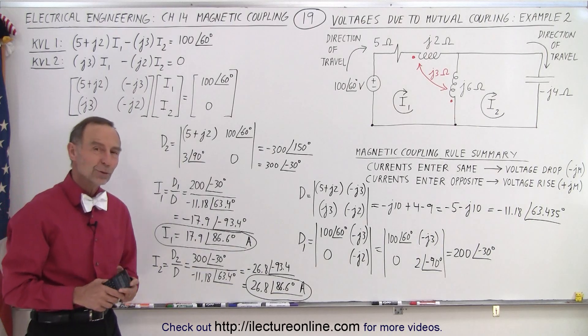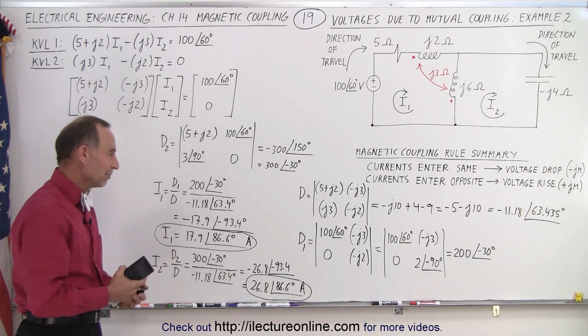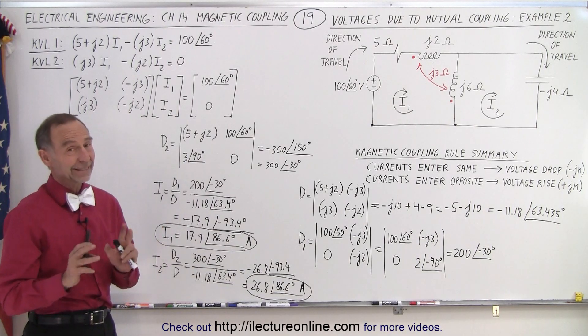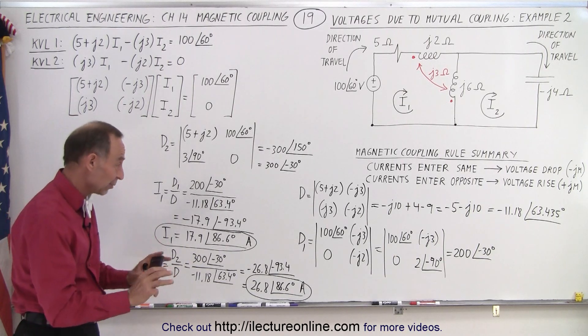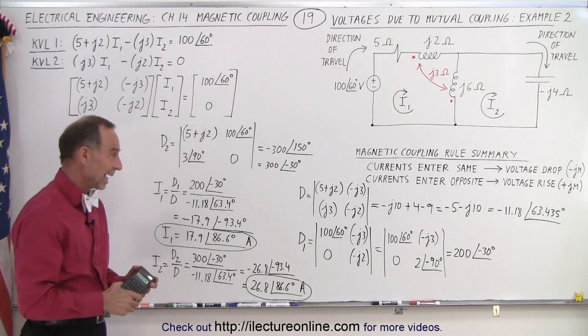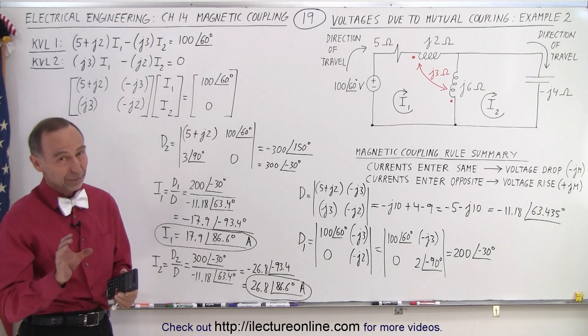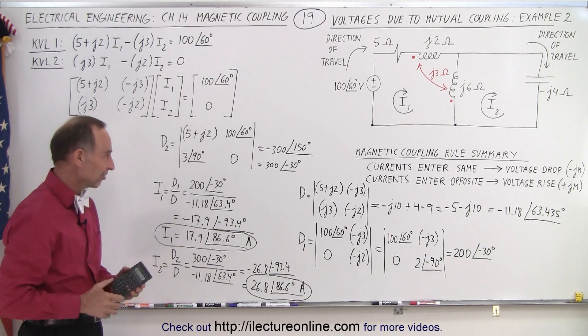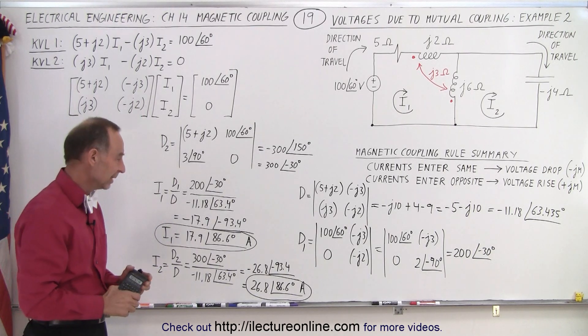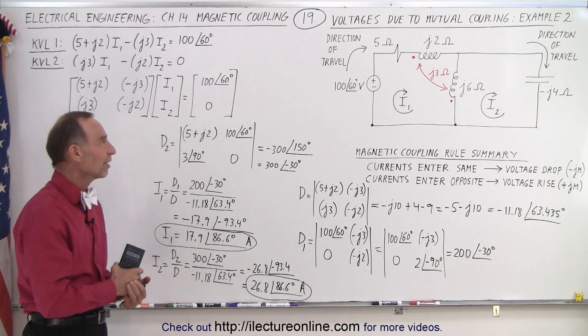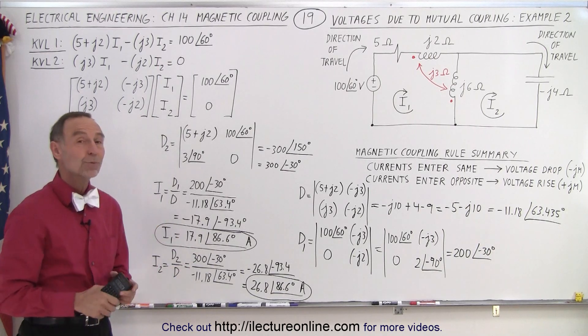And that is how you find the two currents once you have the two equations correct. Getting those two equations correct is paramount. Once you have them, the rest is fairly mechanical. Of course, it's still easy to make a little mistake here and there, forget a negative sign like I did. Good thing I caught it. But that's how it's done. That's how you find the currents when you have mutual coupling.